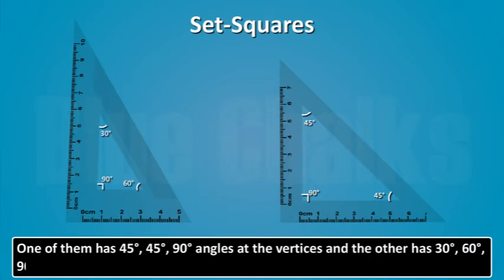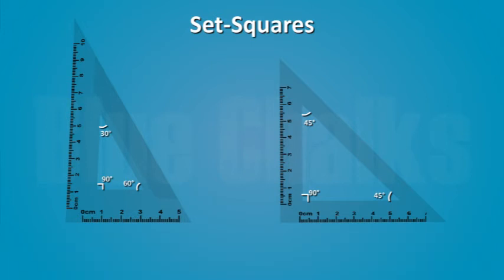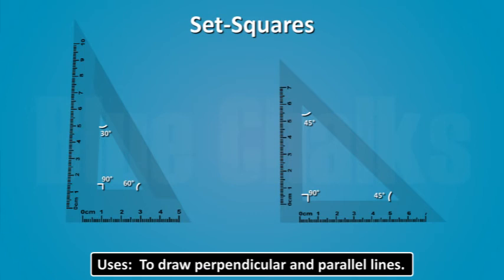60 degree, 90 degree angles at the vertices. Set squares are used to draw perpendicular and parallel lines.